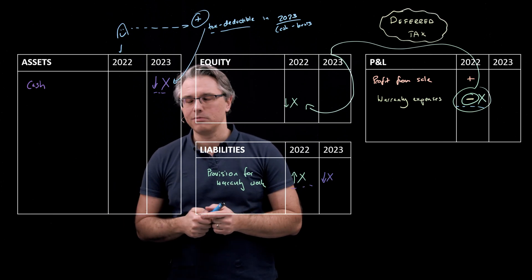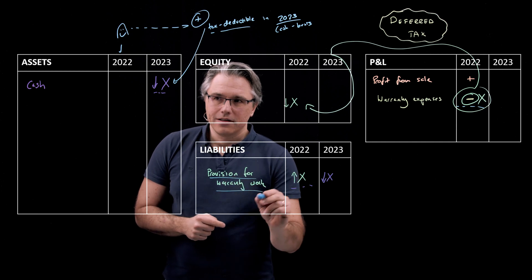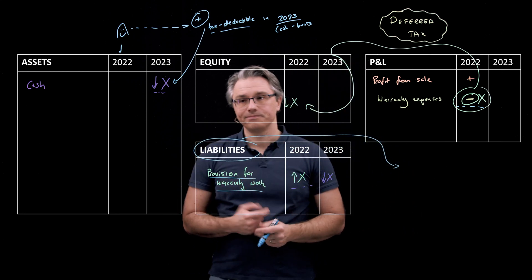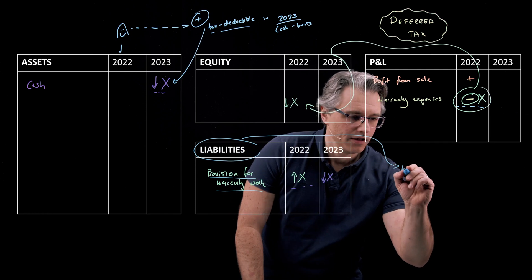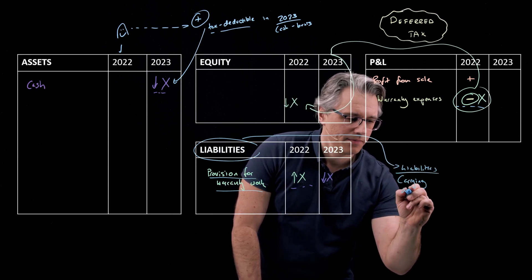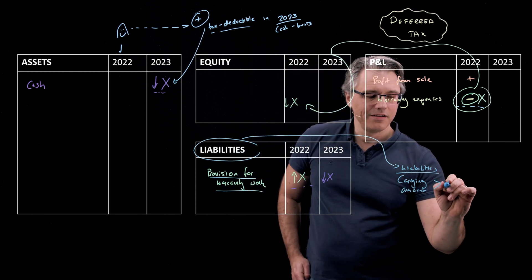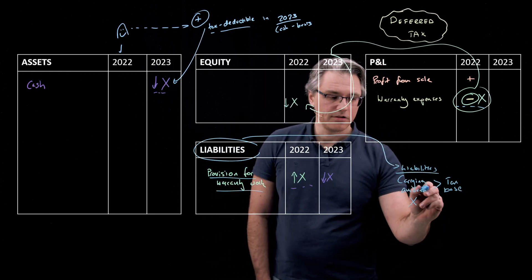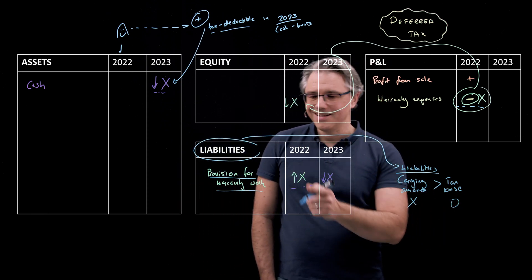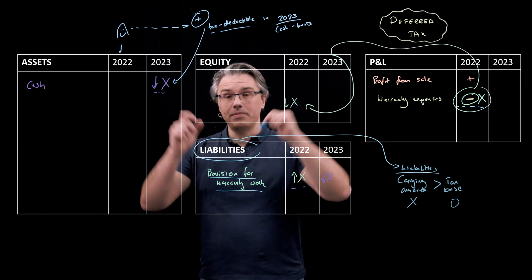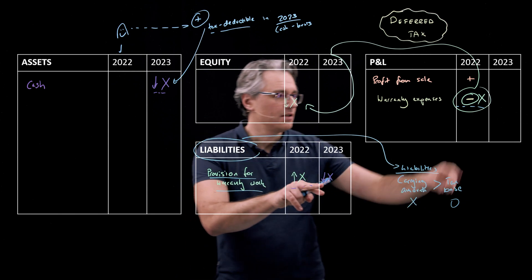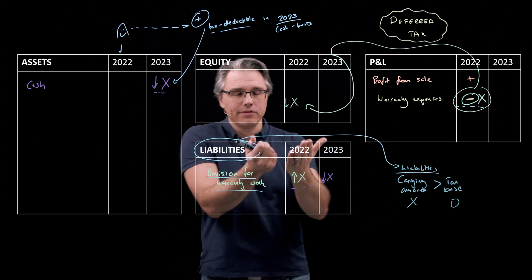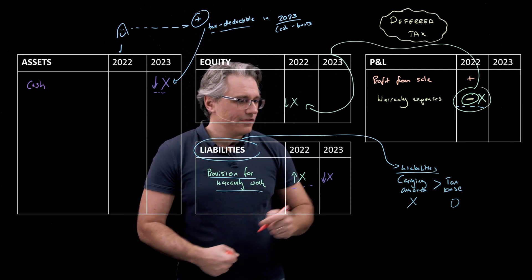Now, you could also think about it from the point of view of the rules that we introduced a couple of lessons ago. The provision for warranty work is sitting within our liabilities. And the classic textbook rule is if for liabilities, the carrying amount of a liability is higher than its tax base, and it is because the carrying amount here is in the balance sheet X. And from a tax perspective, it's zero. This doesn't exist in any tax-based balance sheet because the only reason why this exists here is because we've recognized the expense in the P&L. If you did something similar for tax purposes, you wouldn't have an expense in P&L and you wouldn't have, therefore, a corresponding liability.